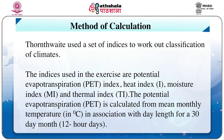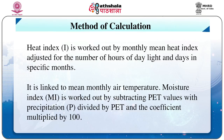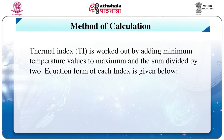Method of calculation: Thornthwaite used a set of indices to work out classification of climates. These indices are: Potential Evapotranspiration (PET) index, Heat Index (i), Moisture Index (MI), and Thermal Index (TI). The PET is calculated from mean monthly temperature in degree Celsius in association with day length for a 30-day month with 12-hour days. Heat Index i is worked out by monthly mean heat index adjusted for number of hours of daylight and days in specific months, linked to mean monthly air temperature. Moisture Index MI is worked out by subtracting PET values from precipitation P, divided by PET, multiplied by 100. Thermal Index TI is worked out by adding minimum and maximum temperature values and dividing the sum by 2.